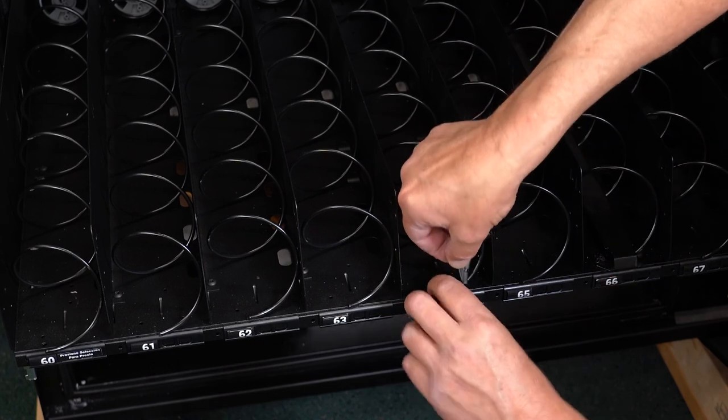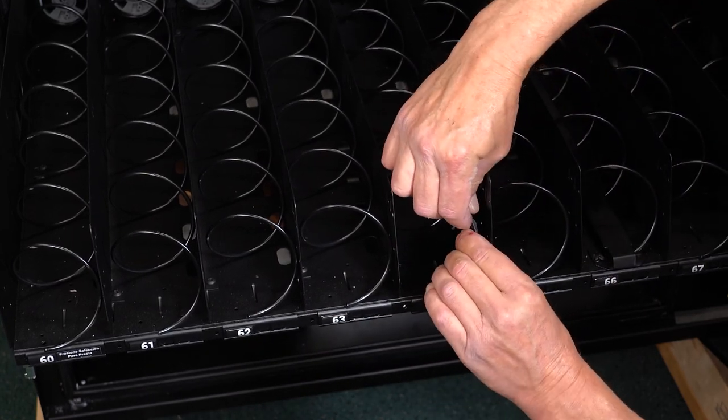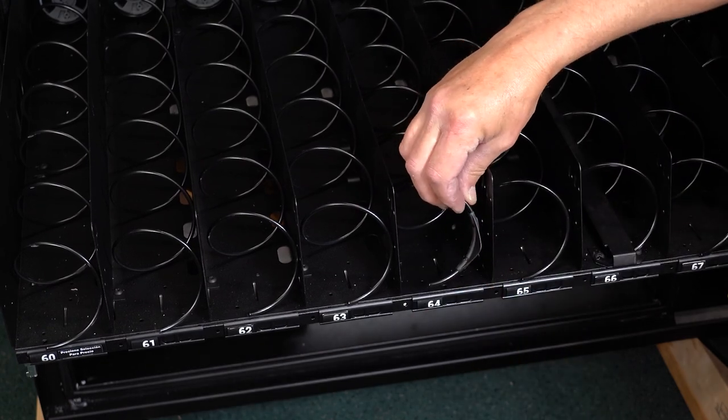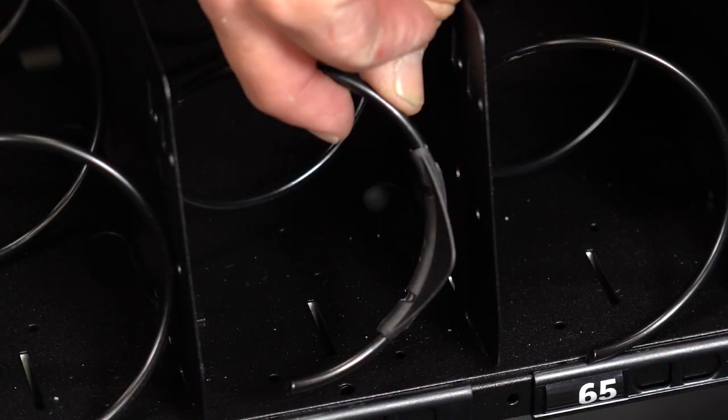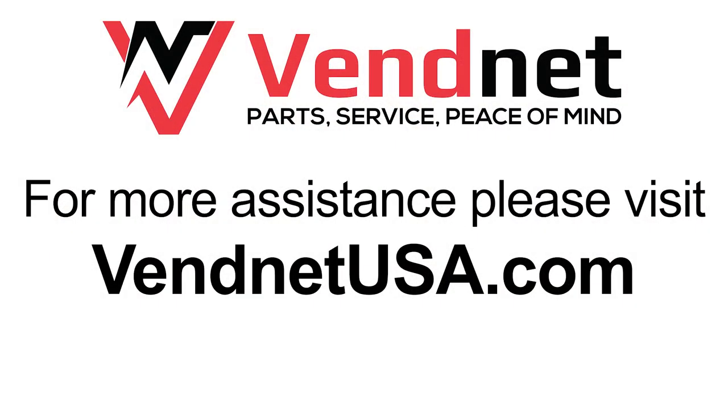Product pushers aid product ejection from the tray with a single 360 degree rotation. Place the pusher on the end of the coil like this. It will snap into place. For more assistance, contact Vennet technical support at 1-800-833-4411 or email service@vennetusa.com.